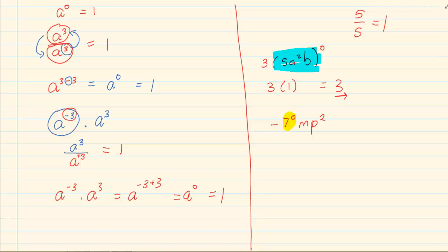You will notice that the minus is not in brackets, neither is it attached to the power of 0. So our answer would be minus 1 for the 7 to the power of 0, mp squared.